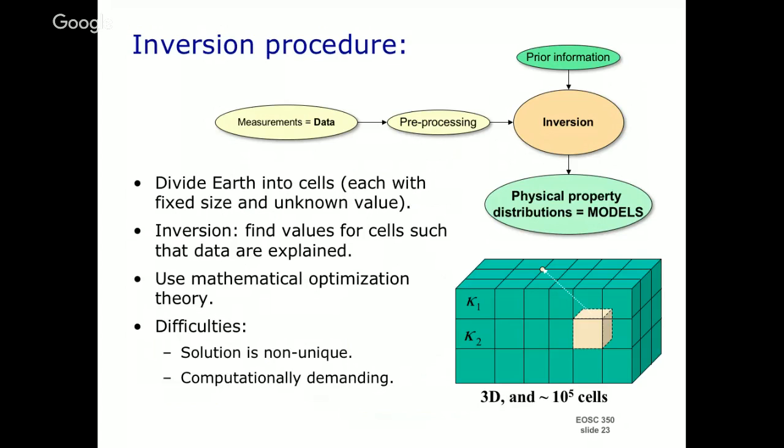The process is as follows: we've got some data we measure, maybe do some pre-processing, and to solve this inverse problem, we make a mathematical description of the Earth. We take a volume — say 100 by 100 by 100 meters — divide it up into little cells, maybe a meter by meter by meter. In each cell there's a constant physical property. We adjust these cells so we end up with a distribution of susceptibility that would reproduce the data and is consistent with whatever prior knowledge we have.